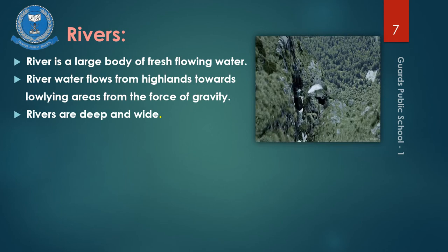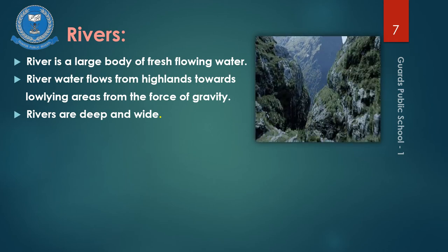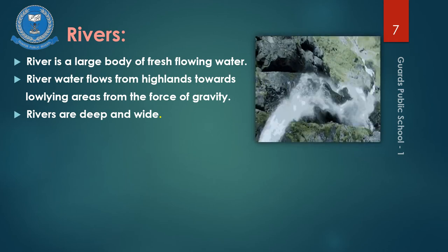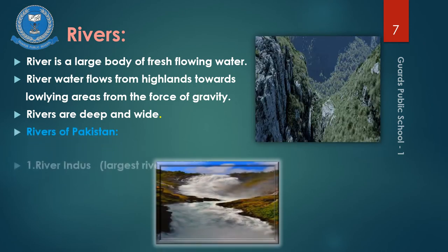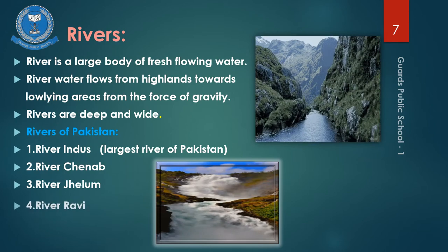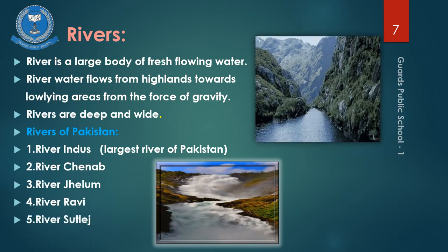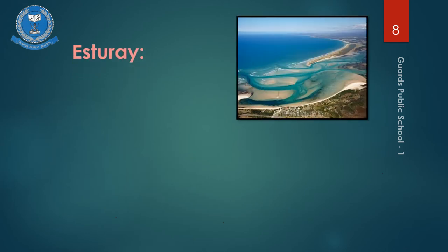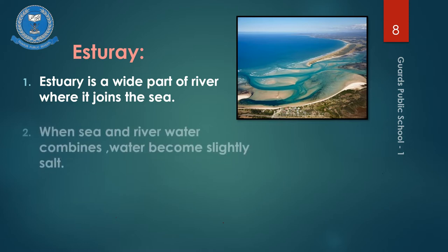Rivers have fresh water, but where a river meets the sea, the water there becomes salty. The River Indus is the biggest river of Pakistan and our agriculture depends on it. The Indus River falls into the Arabian Sea at its estuary.